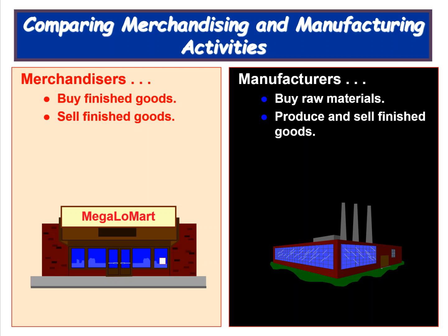Managerial accounting applies to service firms, merchandisers, and manufacturers. A merchandiser is a company that buys finished goods — goods that are completed and ready for sale — and then sells them. Think of Target, Walmart, or Home Depot. Manufacturers, on the other hand, buy raw materials, then produce and sell finished goods. Tesla is a good example — they do the manufacturing themselves. If a company buys raw materials and fabricates the product to finish it, that's a manufacturer.